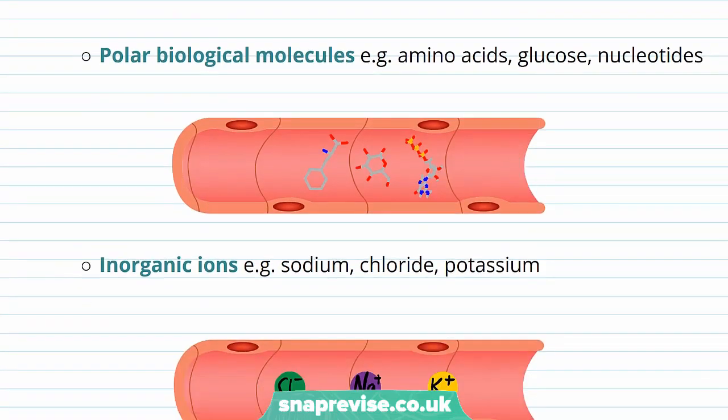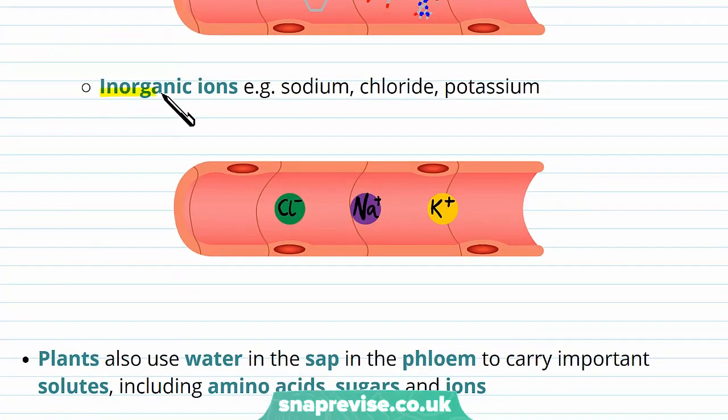The water can also transport and dissolve polar biological molecules like amino acids, glucose, and nucleotides. These molecules are polar enough that they can interact with the water's charges and be carried through the bloodstream. Also inorganic ions as well, because they have a charge which can interact with the water molecules. Particularly important ions are sodium, chloride, and potassium, which we get from our diet.